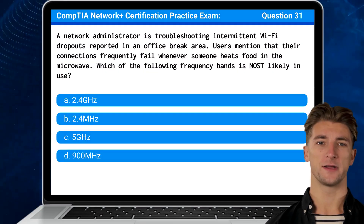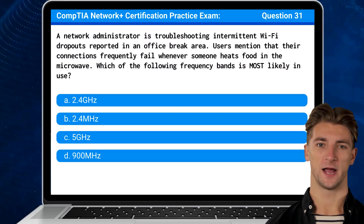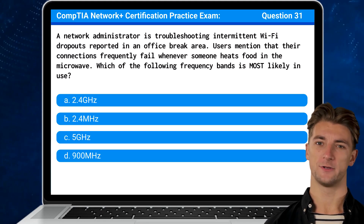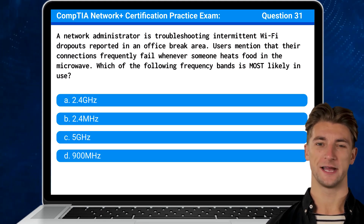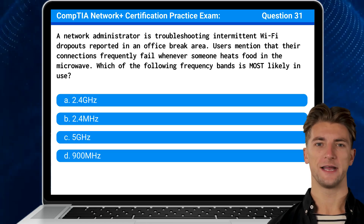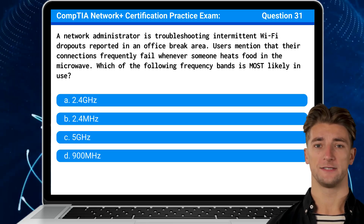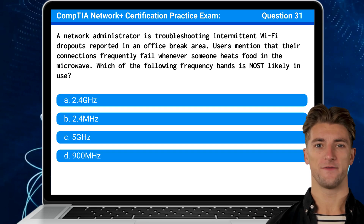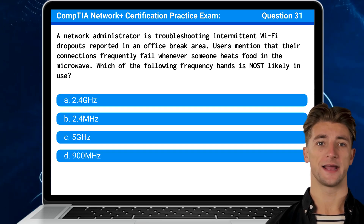Question 31: A network administrator is troubleshooting intermittent Wi-Fi dropouts reported in an office break area. Users mention that their connections frequently fail whenever someone heats food in the microwave. Which of the following frequency bands is most likely in use?